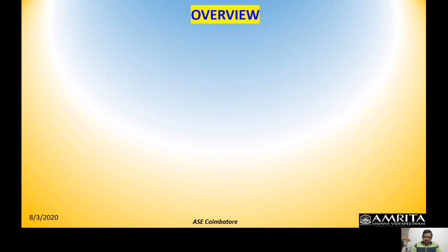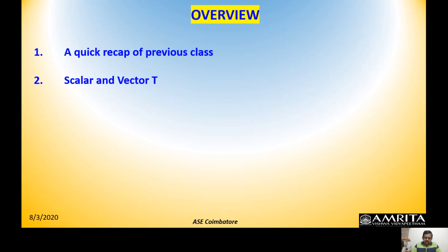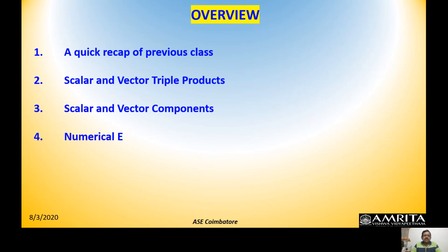One more thing I want to state: in the last class we mainly focused on the rectangular coordinate system — the Cartesian coordinate system. Within that system, the unit vectors along x, y, and z directions are â_x, â_y, and â_z. A second representation you will also see in textbooks is i, j, k along the x, y, z directions respectively. So if a numerical problem uses â_x, â_y, â_z or i, j, k, both are equivalent representations.